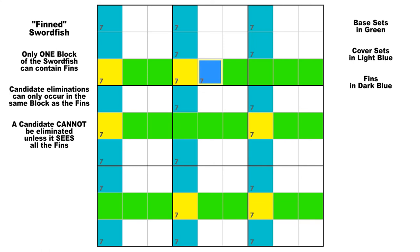If the fin is false, then you have a normal swordfish and these two candidate 7s in row 1, column 4, and in row 2, column 4, would be false. But if the fin is true, that would negate all other candidate 7s in the rest of block number 2, because there can only be one 7 placed in that block. So these two 7s in the red cells are false either way and can be eliminated. Both cases for the fin lead to the same conclusion.